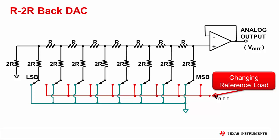Some R2R DACs may have a built-in buffer to help drive the reference. You can find out if your DAC does have one by looking at the input current to the reference pin. If it changes on a code-to-code basis, there's no reference buffer.